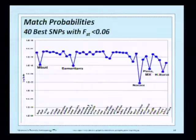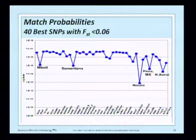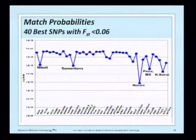We identified a set of SNPs — 40 of them — that constituted a good preliminary panel and published it. Here are the match probabilities around the world.